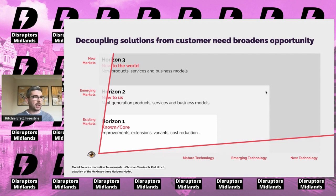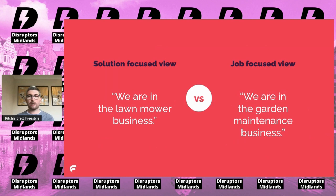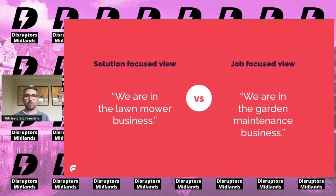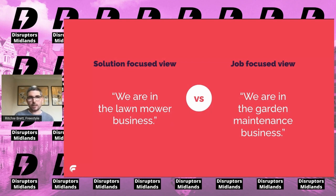Take Flymo as an example. They could see themselves in Horizon One — we're in the lawnmower business. But if they applied a jobs focus and understood that people don't want a lawnmower, they want a beautiful garden, suddenly the solutions they can develop, the new business models they can create, become much wider. There's more scope and more opportunity to look at different ways of achieving that goal.